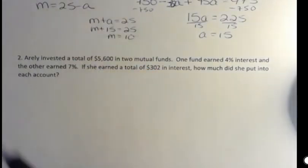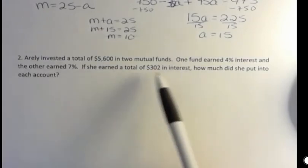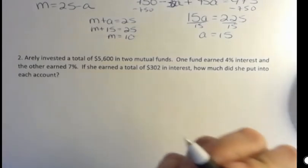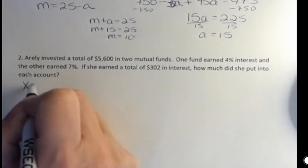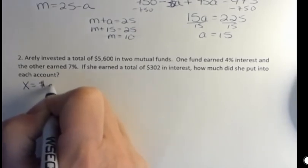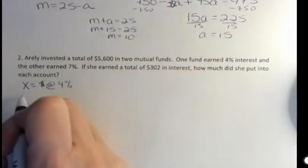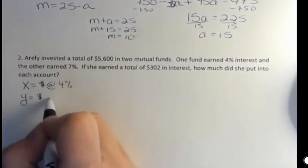So it's like the last one in that we have a number total and then we have the like, instead of tuition, we have interest, but there's a similarity to these. But I'm going to use, I'll use X and Y here. X equals the dollars that she invested at 4%. And Y is going to be the dollars that she invested at 7%.